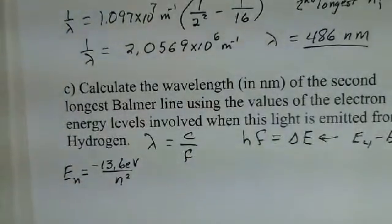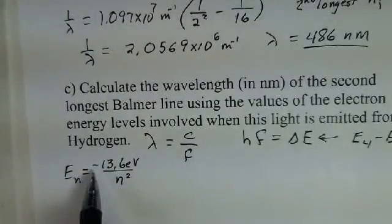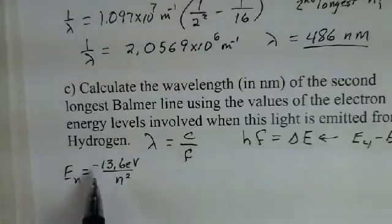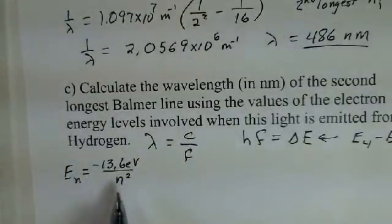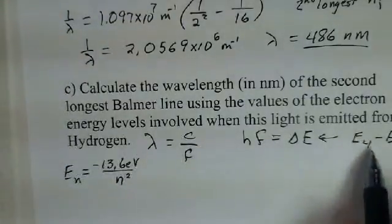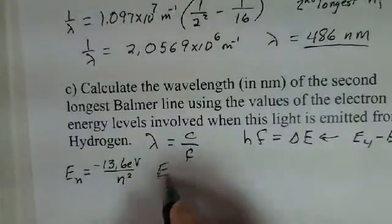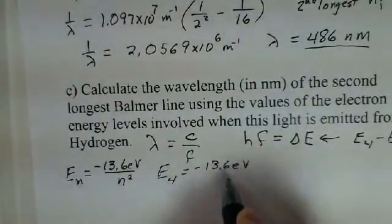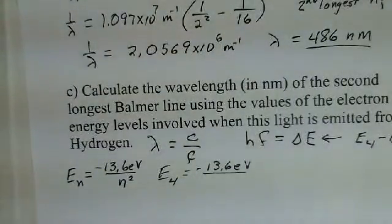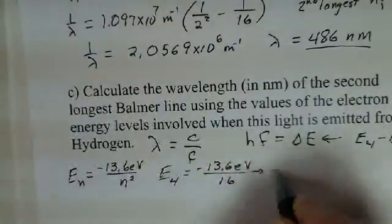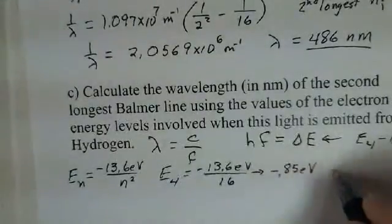Minus 13.6 electron volts divided by n squared. The negative sign here informs us that the electron is bound to the nucleus. The total energy of the electron is a negative number. That's all right, it's allowed. And now we have to put in some n values here. So if we do this, we see we need 4 and 2. Now if I put in, I'll do the 4 first. Minus 13.6 electron volts. What do we divide by? We have to divide by 16, 4 squared.